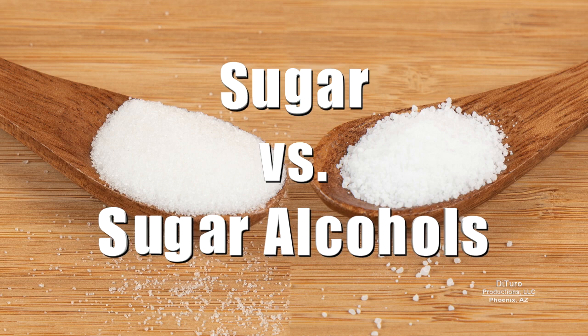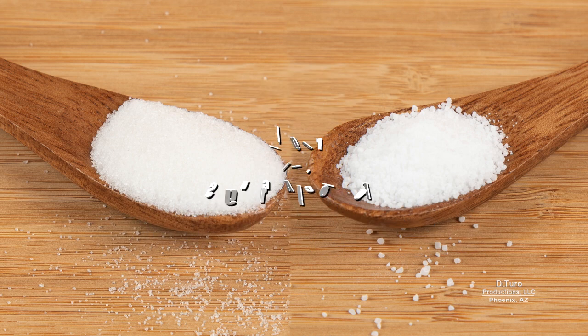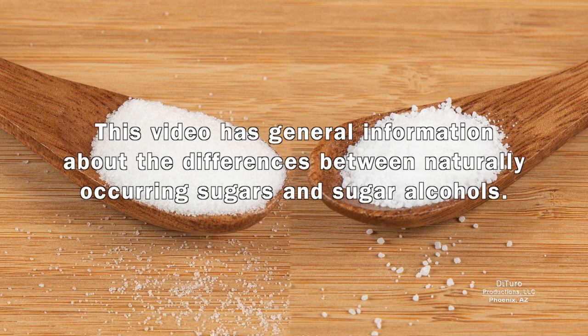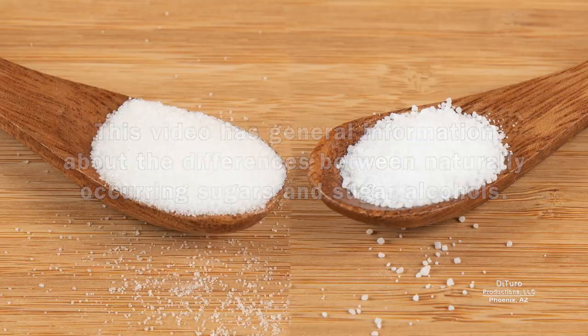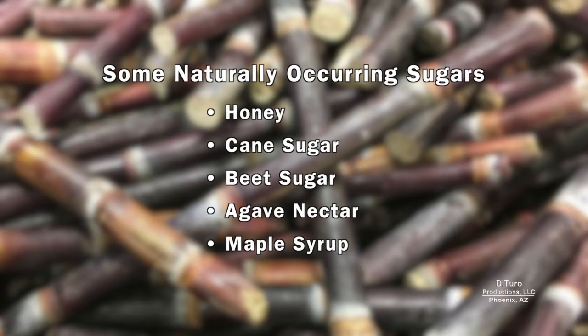Hi, this is Daniel DiTuro. This video has general information about the differences between naturally occurring sugars and sugar alcohols. Some naturally occurring sugars include honey, cane and beet sugar, agave nectar, and maple syrup.